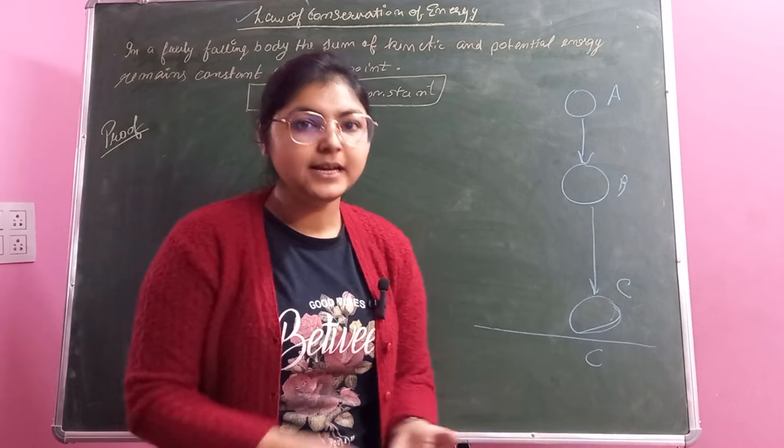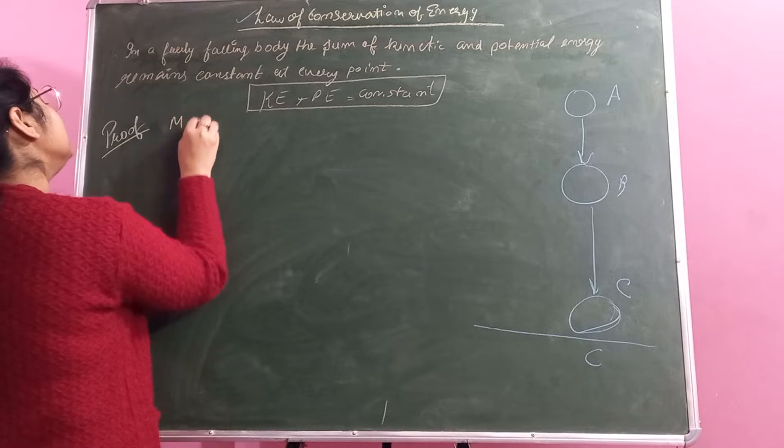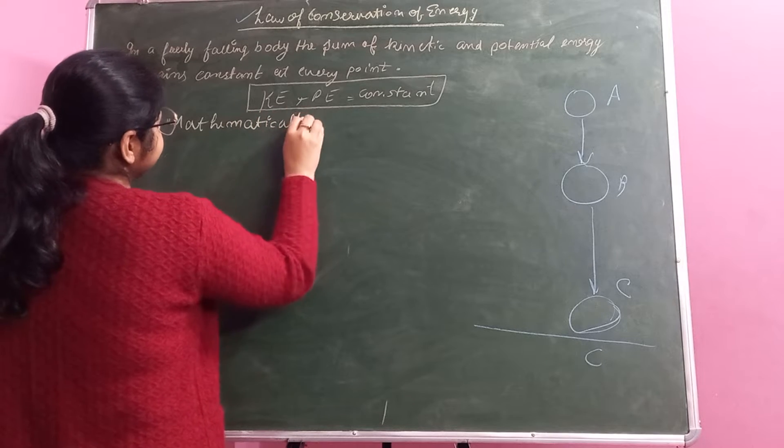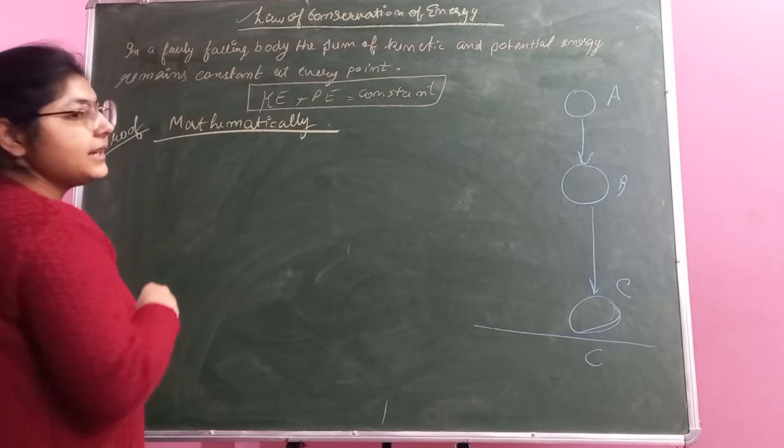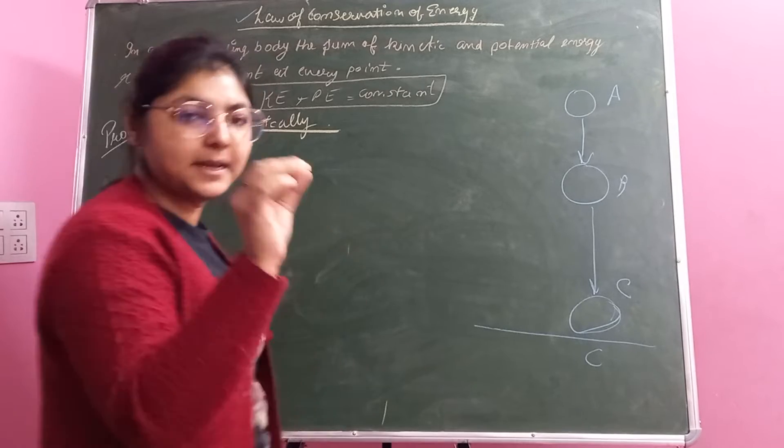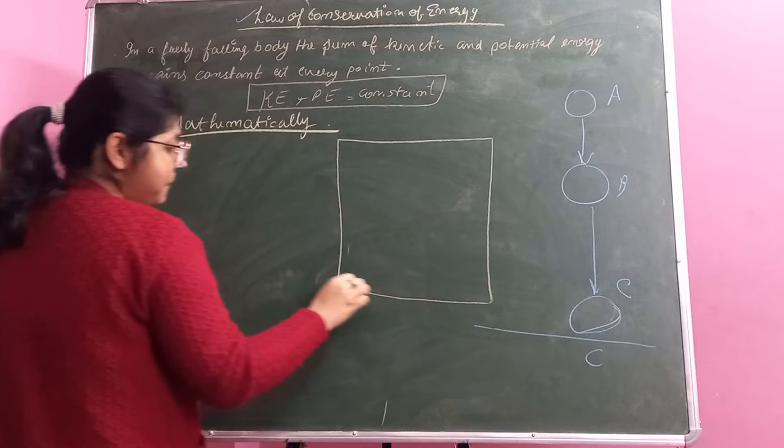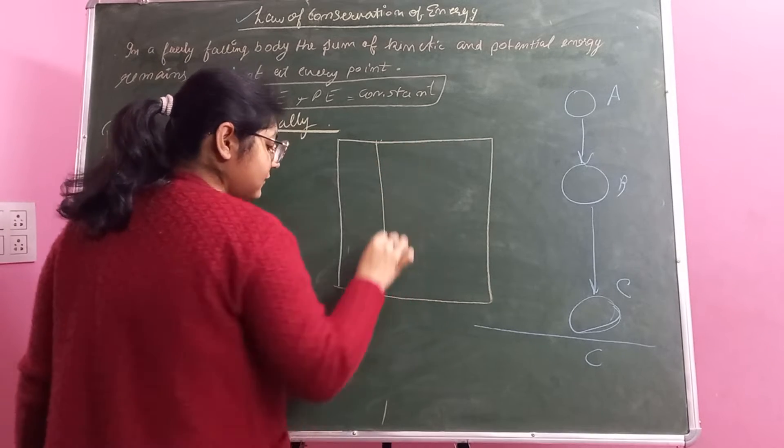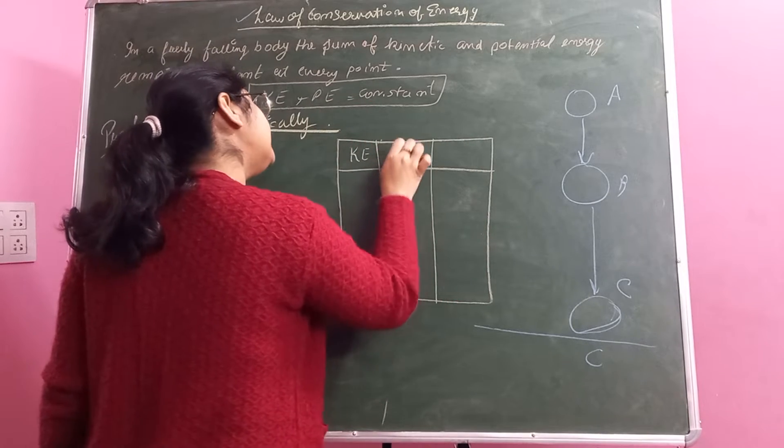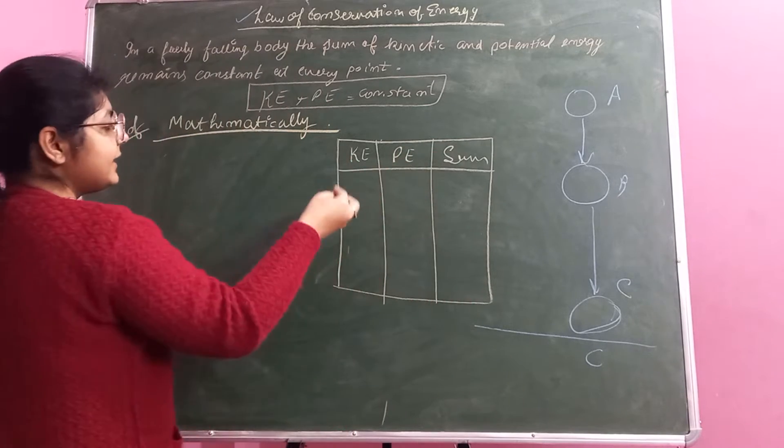Sometimes they ask you to prove it mathematically. So how do we prove this? Let's see. Suppose if a body is falling freely, at the top suppose kinetic energy is zero,